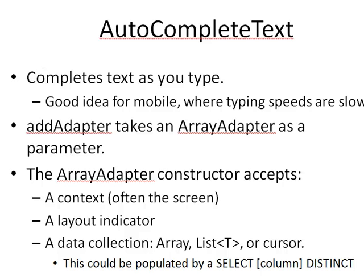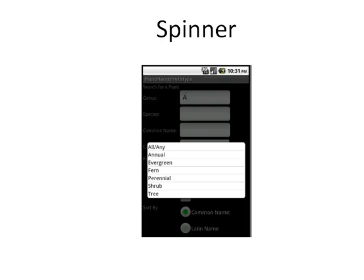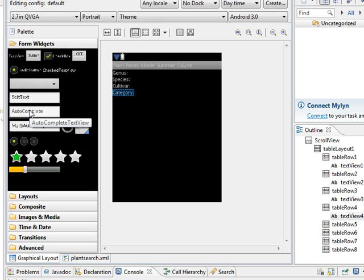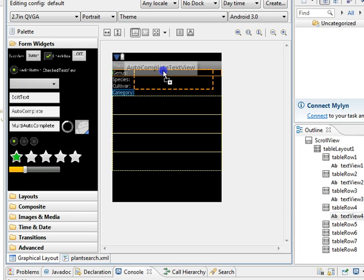The trick is we have to have some data to give to the autocomplete through its array adapter. That's where we're going to take advantage of the concept of an interface and a stub class that implements that interface. We'll also look at spinner, which is a drop-down that works on the same adapter principle. To wire up these adapters, we're going to need an activity.